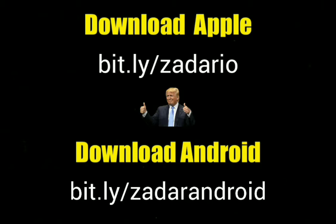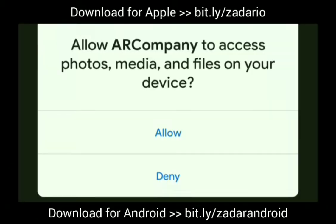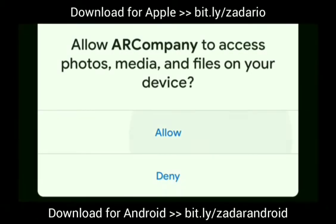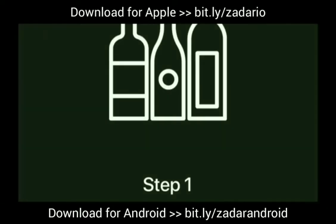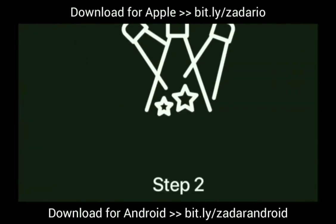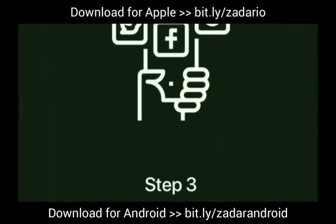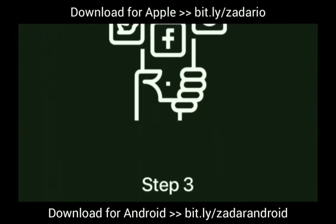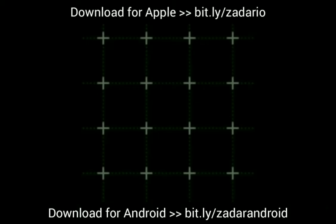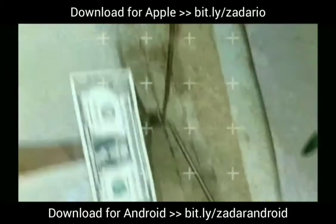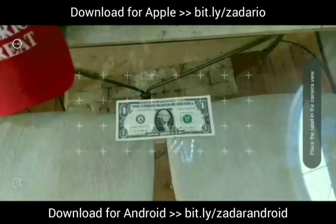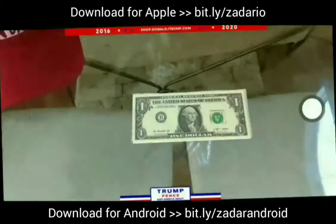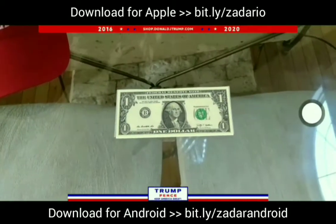The first thing you want to do is download the app from one of those links, run the AR app on your phone and then just follow the steps. Once you have it installed, turn your phone sideways and then put a $1 US bill on your table and enjoy the show.